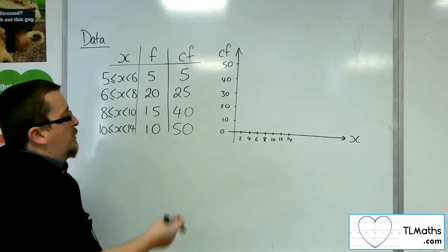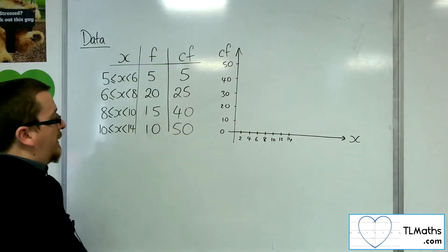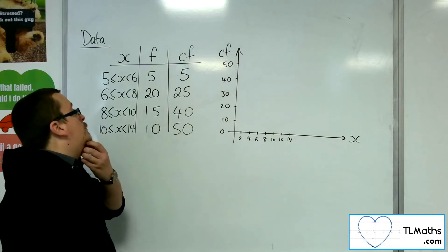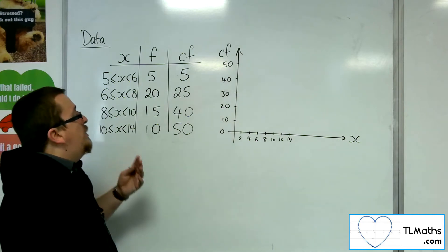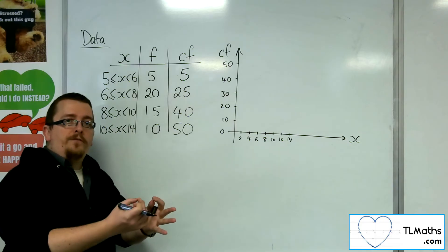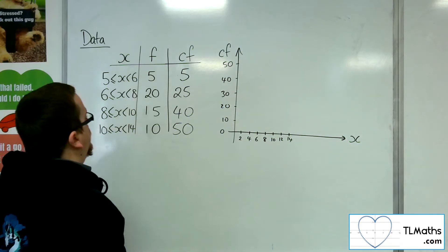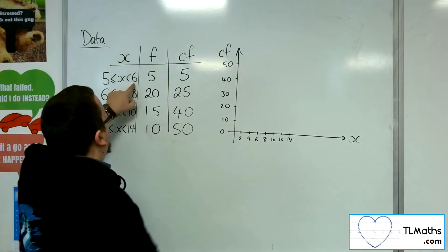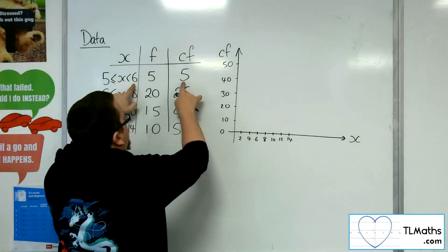Okay, I could have gone a little bit longer, but I'll keep with that. So, now how you plot this is that you always use the end point of the class interval with the cumulative frequency. Okay, so 6 and 5.